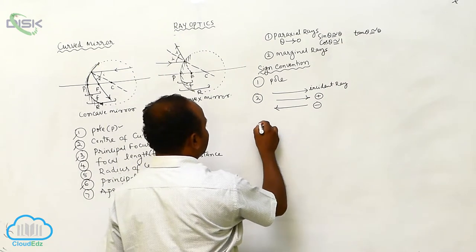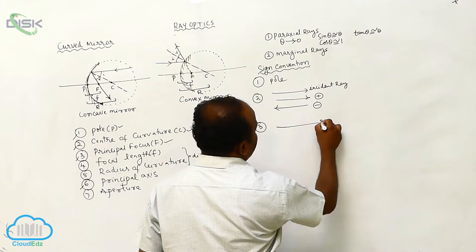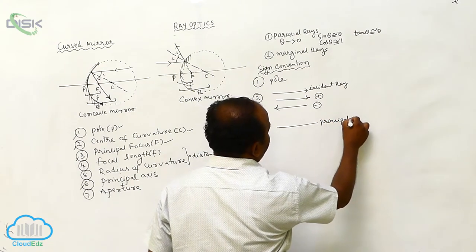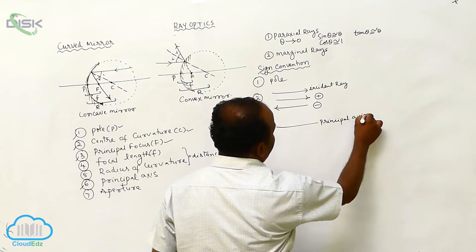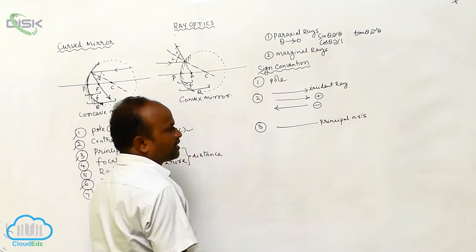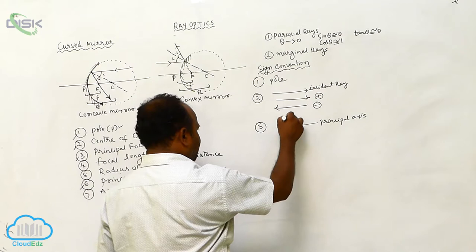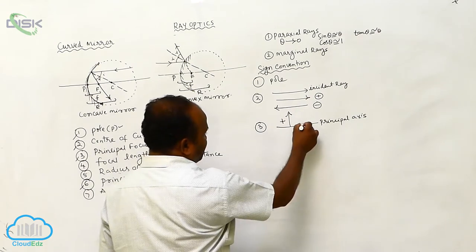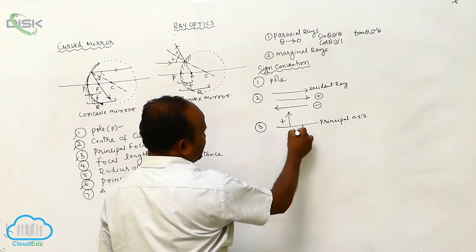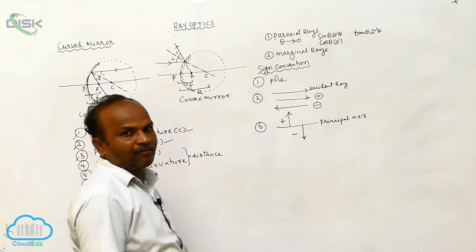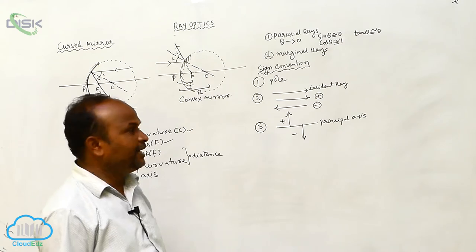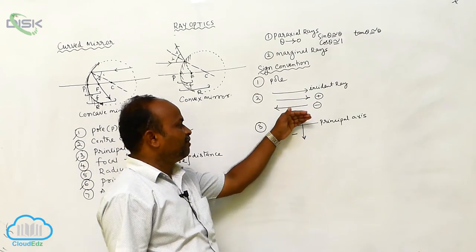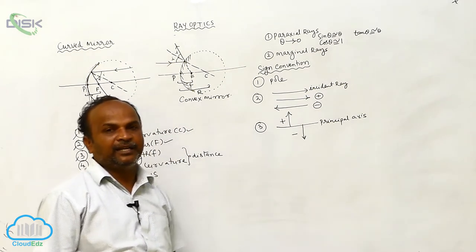Third one: this is called the principal axis. If the heights measured above the principal axis are taken as positive, the heights below the principal axis are taken as negative.